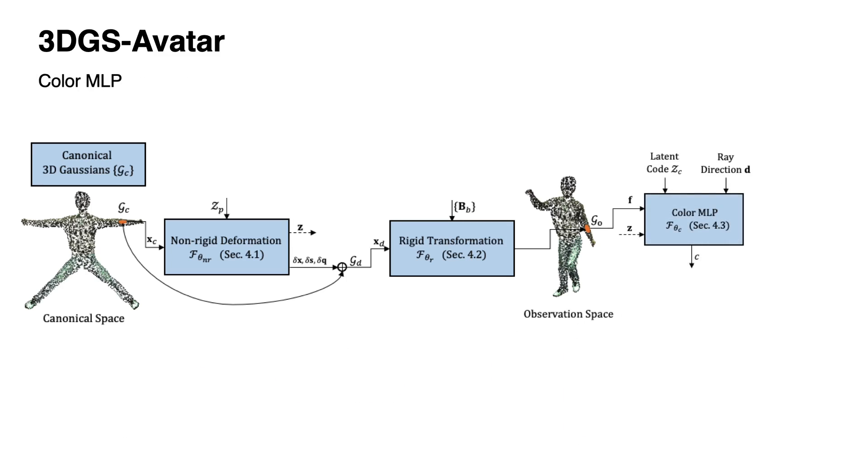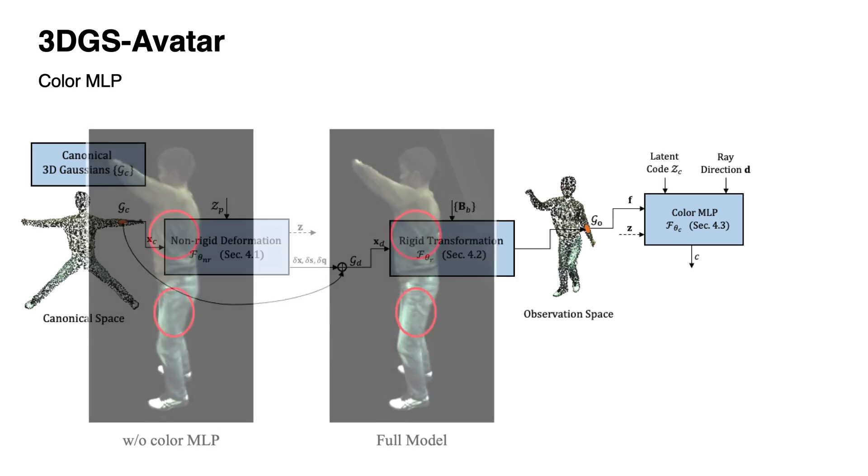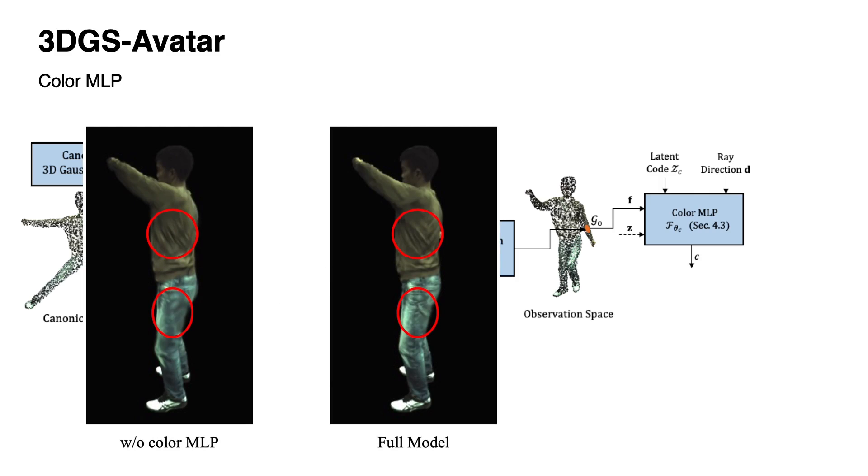We augment appearance modeling via learning a shallow color MLP to replace spherical harmonics in 3D-GS. Our designed color decoding scheme is responsive to local non-rigid deformations and dynamic lighting conditions, which helps to recover more realistic cloth wrinkles and sharper textures.